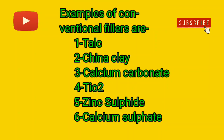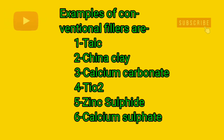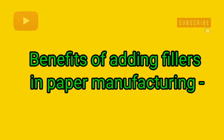Examples of conventional fillers — jho fillers jayatr istimal hotate hain pulp mein — woh kawun kawun se hai? Number 1: talc, number 2: china clay, number 3: calcium carbonate, number 4: titanium dioxide, number 5: zinc sulfide, number 6: calcium sulfide.